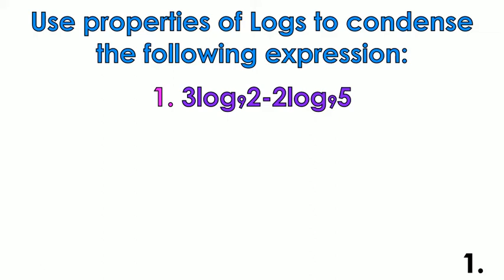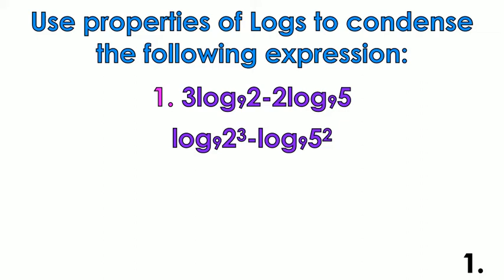We have 3 log base 9 of 2 minus 2 log base 9 of 5. The first thing we're going to use is the power property. The power rule tells us that those coefficients — the 3 and the 2 — are actually going to be changed into exponents. That's our power property, and then the next property we're going to use is the quotient property, because that minus sign is going to turn into a quotient.